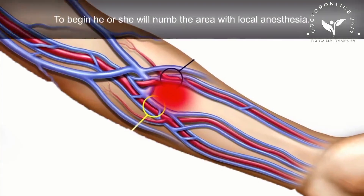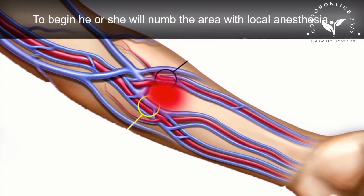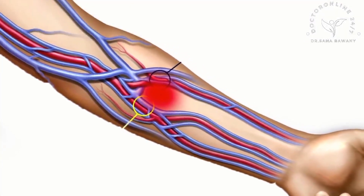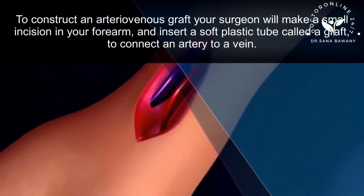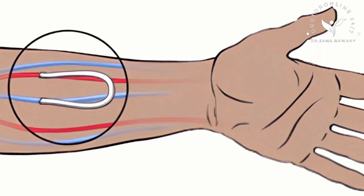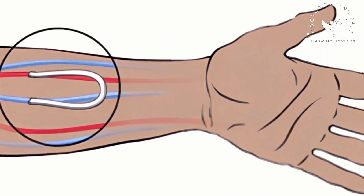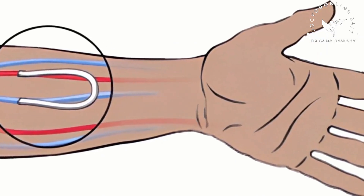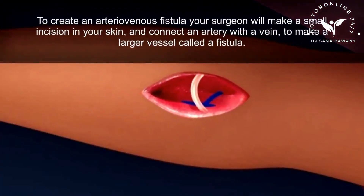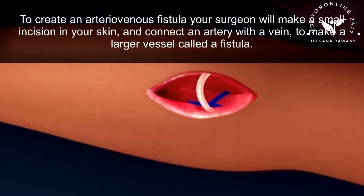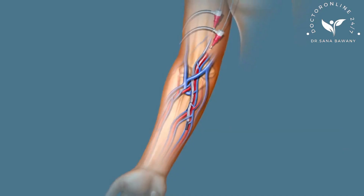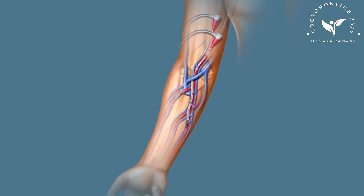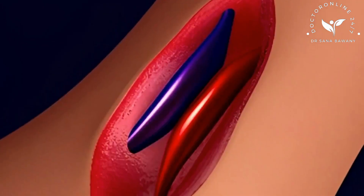To begin, he or she will numb the area with local anesthesia. To construct an arteriovenous graft, your surgeon will make a small incision in your forearm and insert a soft plastic tube called a graft to connect an artery to a vein. To create an arteriovenous fistula, your surgeon will make a small incision in your skin and connect an artery with a vein to make a larger vessel called a fistula.